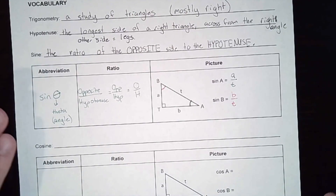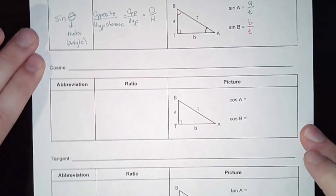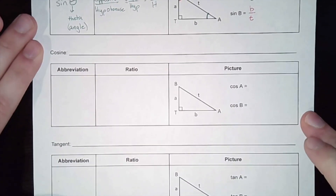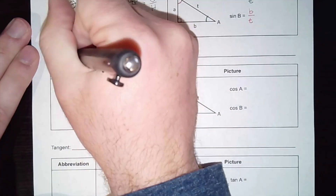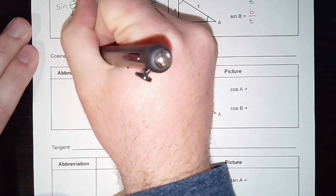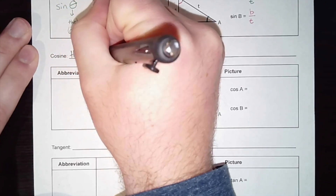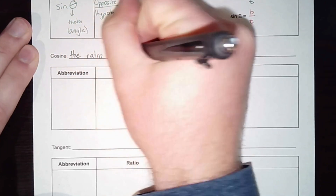Cosine is our next ratio. It is going to be very similar to sine but we use a slightly different side — it is the ratio of what we call the adjacent side to the hypotenuse.